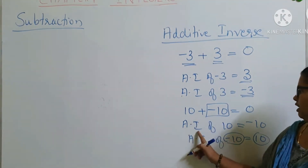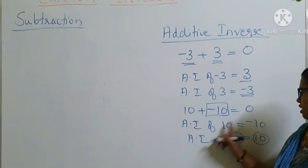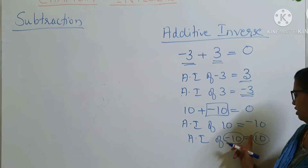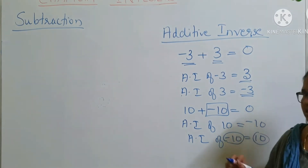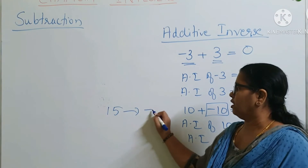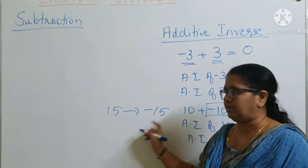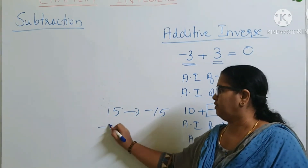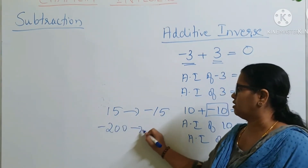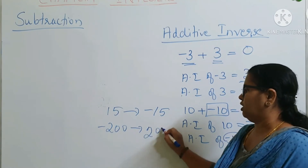That is, the additive inverse of positive 10 is negative 10, and the additive inverse of negative 10 is positive 10. The additive inverse of 15 is minus 15, and the additive inverse of negative 200 is positive 200.